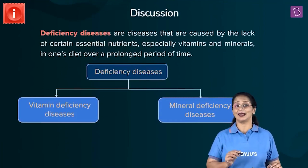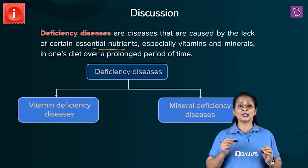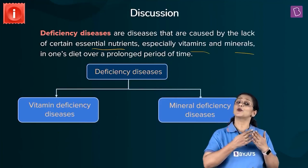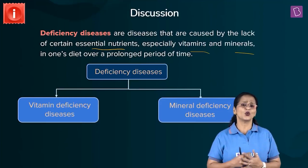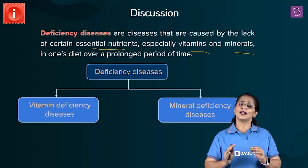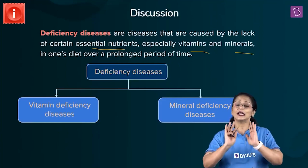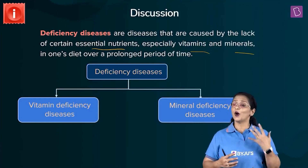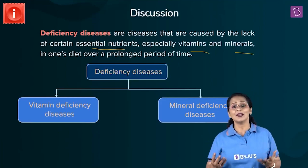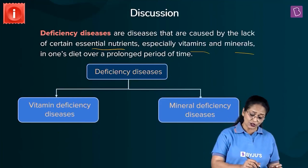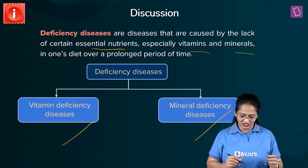Deficiency diseases arise from a lack of certain essential nutrients — especially vitamins and minerals — over a prolonged period of time. That's why a well-balanced diet is so important: everything should be in proper proportion. If the body is deprived of a particular vitamin or mineral over a long period, it leads to vitamin or mineral deficiency diseases.